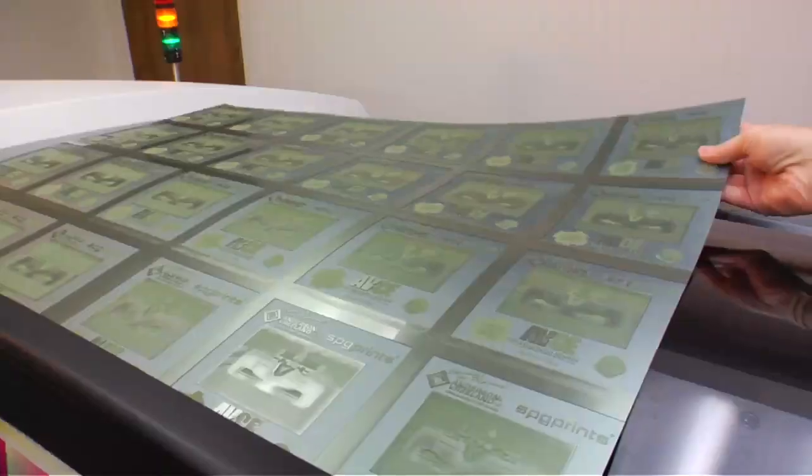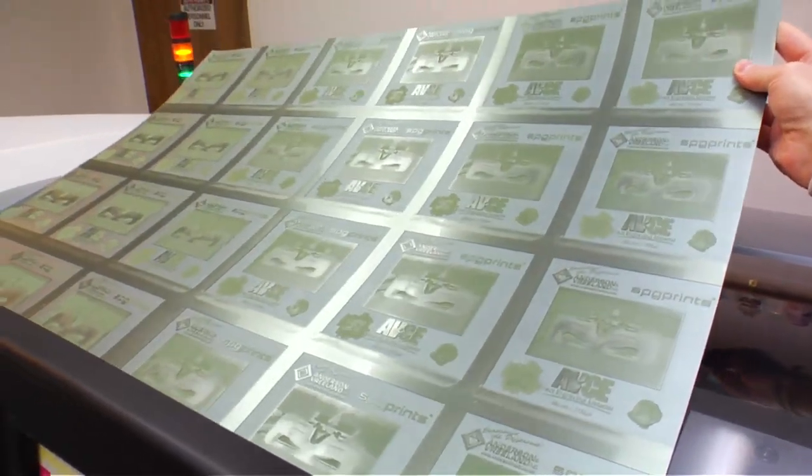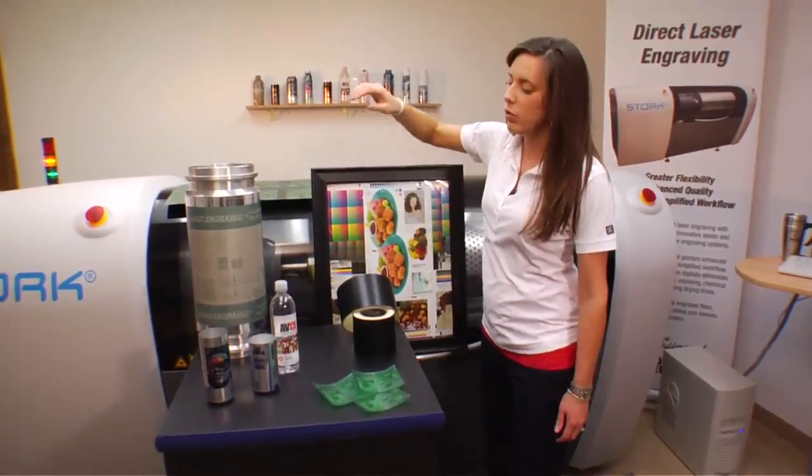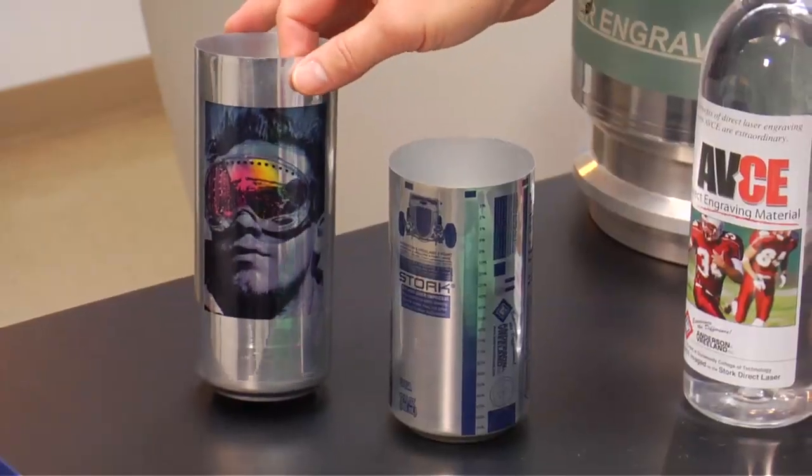And now I'm going to go rinse off the laser residue. We just took our plate material out of the rinse unit and it's actually now ready to go directly to press where we might print on something like these aluminum cans.